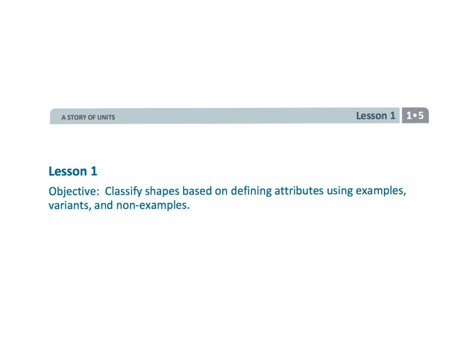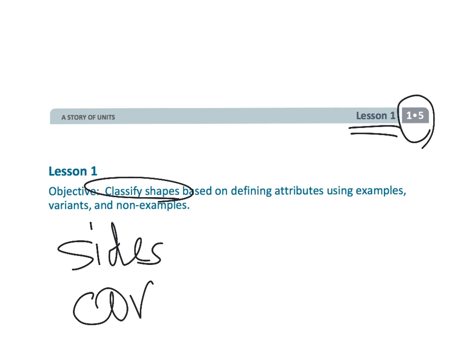And, that wraps up first grade, module five, lesson one. We are classifying shapes. And, really, at this point, we're talking about sides and corners.